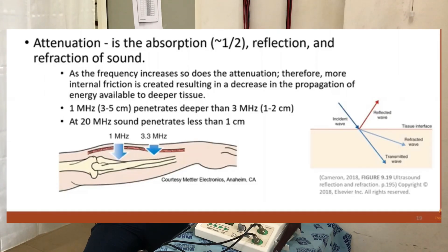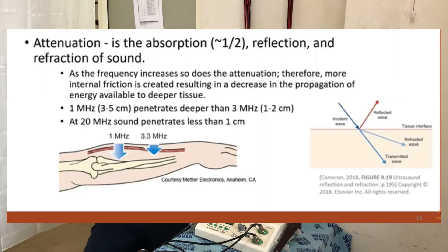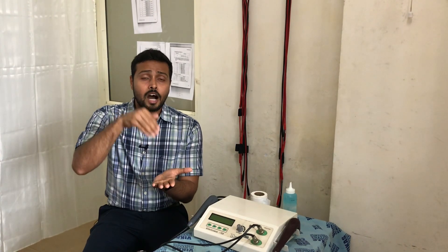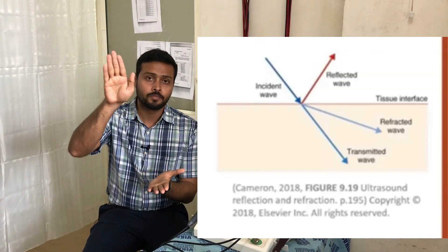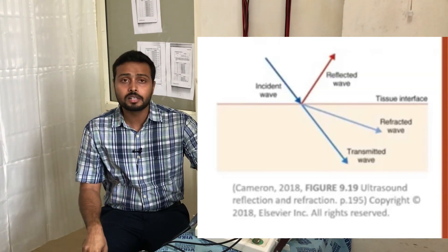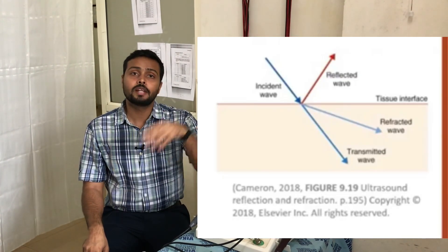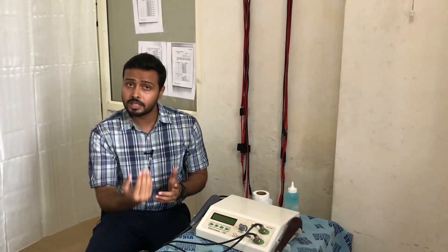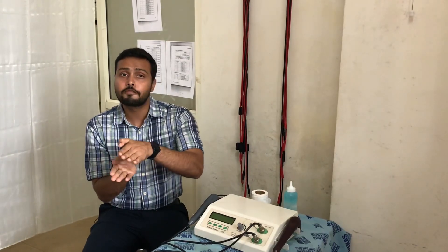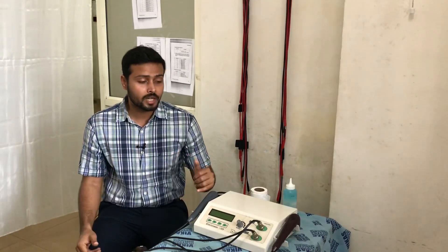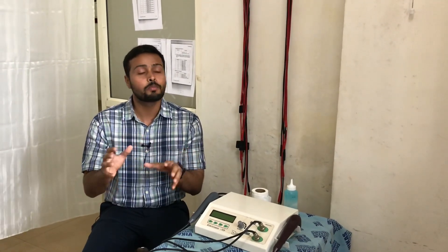Whenever we are penetrating something through the skin, half of it is directly reflected back. So if I am giving ultrasound with an intensity of one, half is reflected when moving on the treatment area, and of the remaining half, half is refracted and half is absorbed. That is why one megahertz and three megahertz have their own importance.